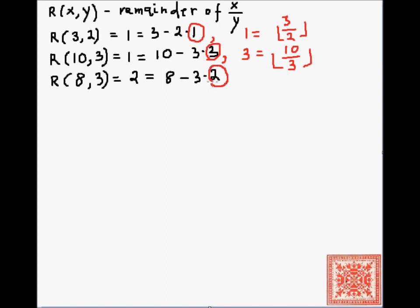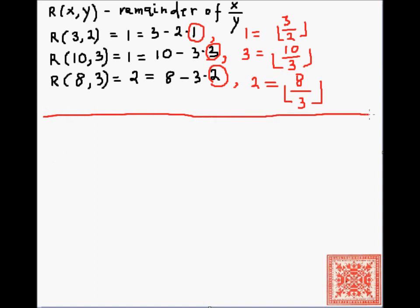In this equality, 3 is the value of the floor of 10 over 3, and in the third example, 2 is the value of the floor of 8 over 3. These three examples give us an insight into how we can actually define this function — the remainder function — and prove that it is indeed primitive recursive.